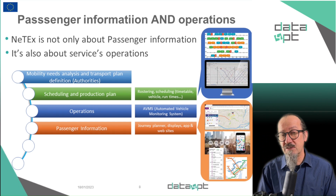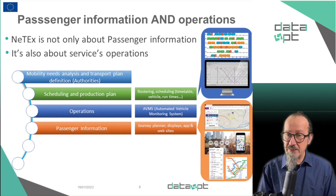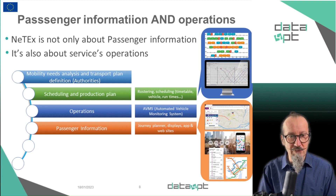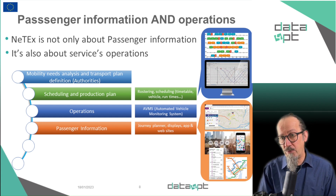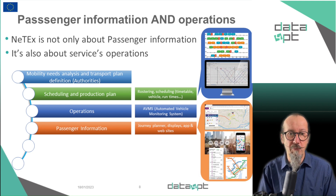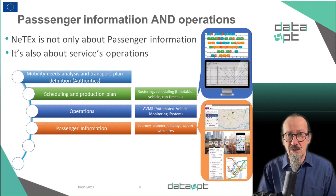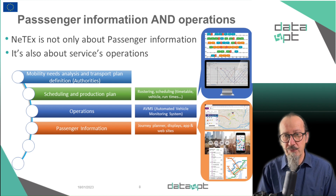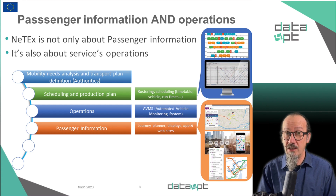This information is forwarded to the operational systems that we usually call AVMS — automated vehicle management systems — which are going to manage the operation, trying to stick as much as possible to the plan and do all the adjustments needed when something happens, such as a traffic jam, disruption, or incidents with passengers.